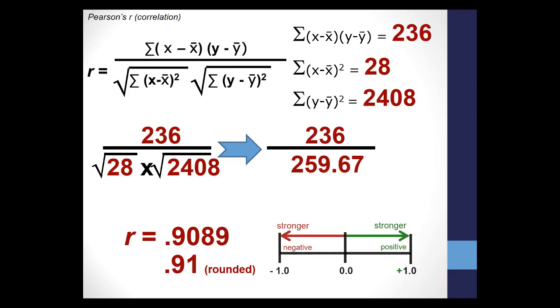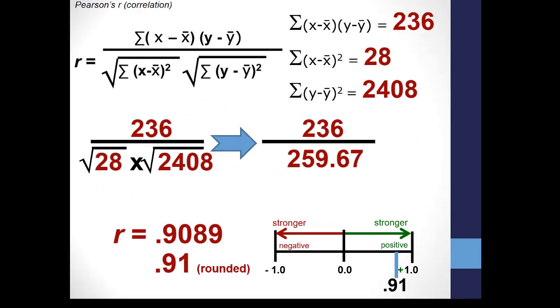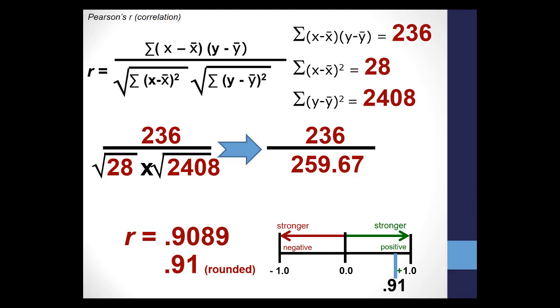What this tells you is, as 0.91 is close to the positive 1.0, it appears to be a fairly strong positive correlation. It appears, then, that the number of hours spent studying for an exam is positively correlated, or connected, to the exam score.